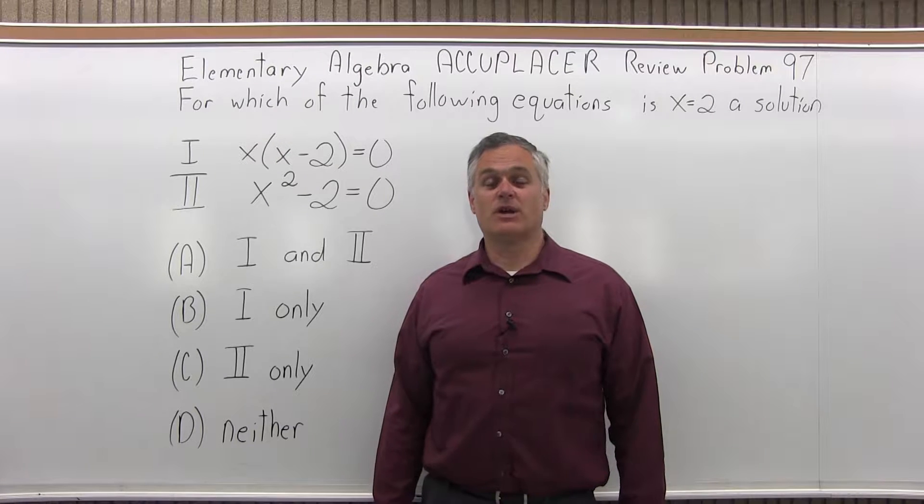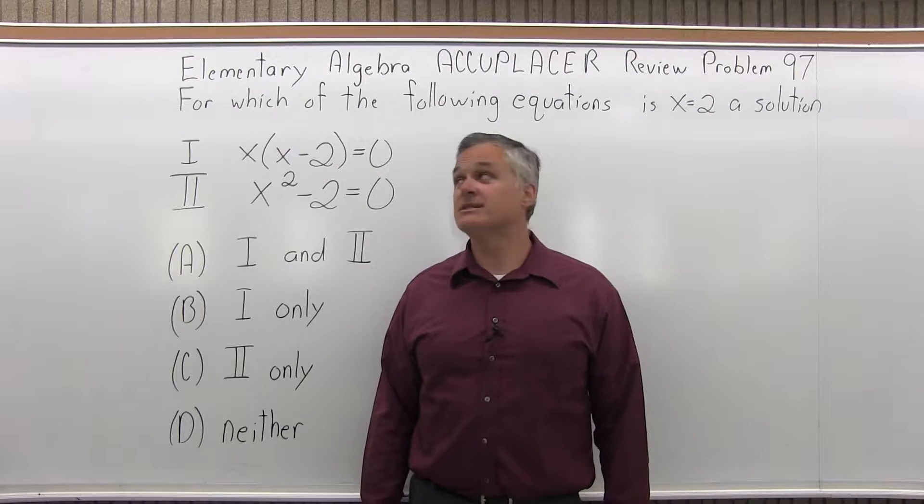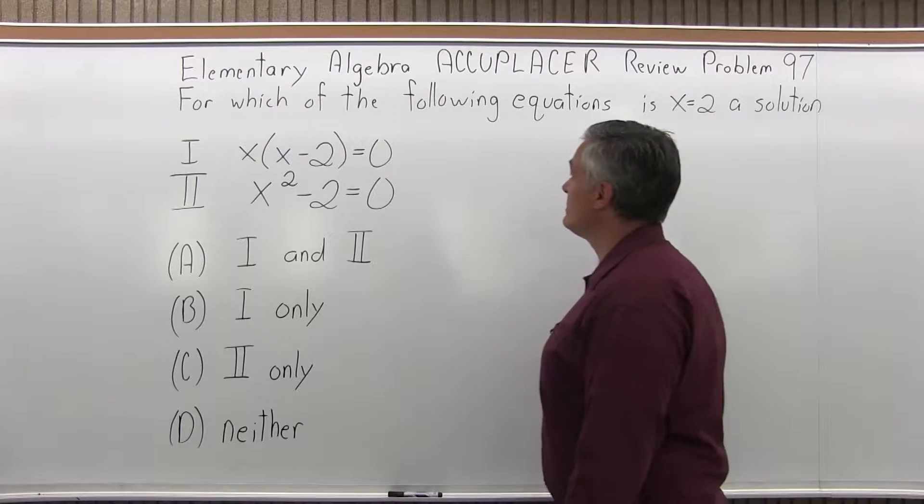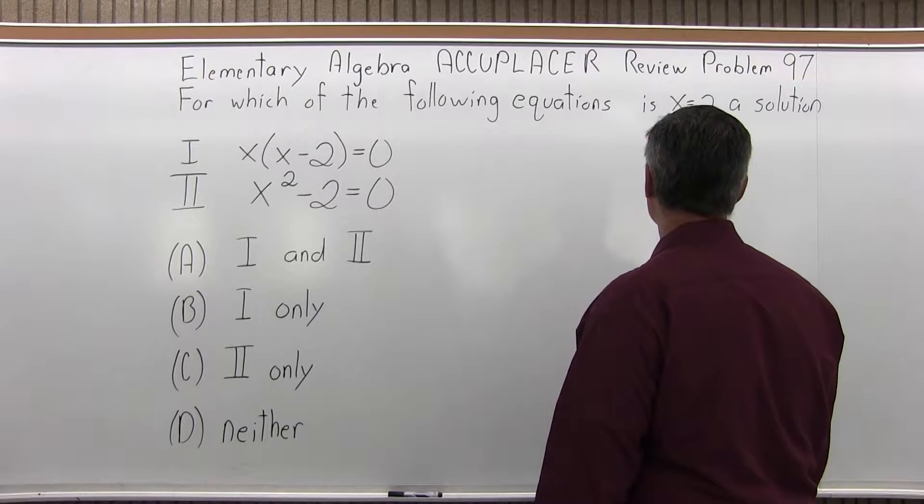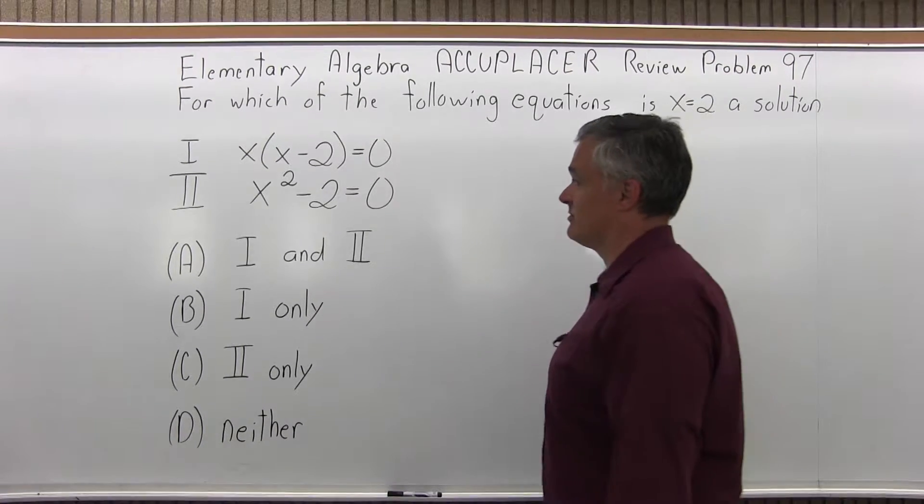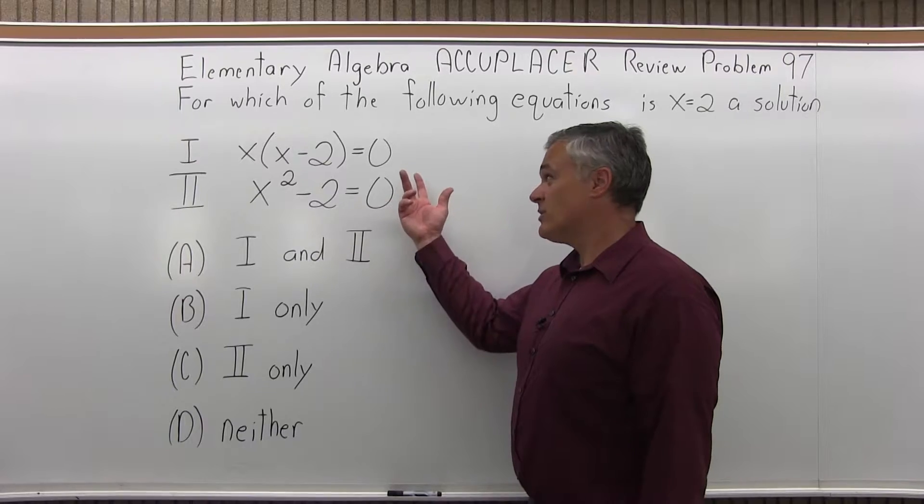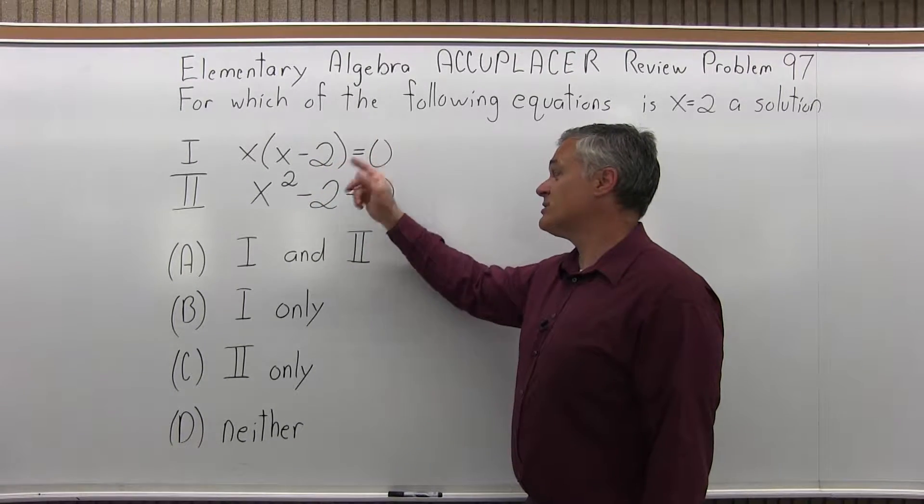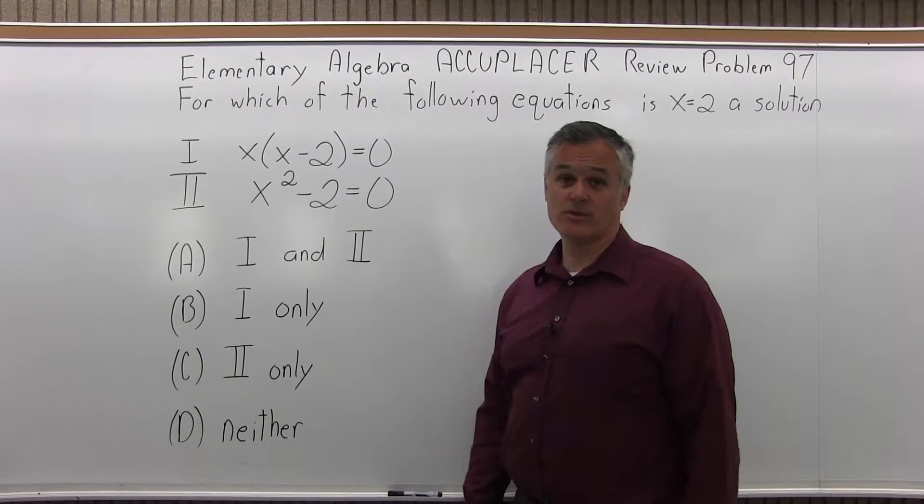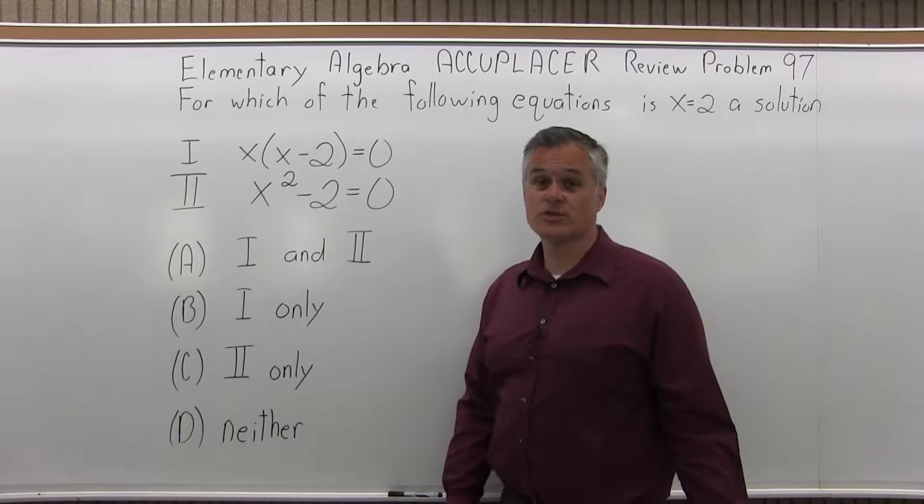This is the Elementary Algebra Accuplacer Review Problem 97. It says, for which of the following equations is x equals 2 a solution? So we have two equations: x times x minus 2 equals 0 and x squared minus 2 equals 0. Which one has x equals 2 as a solution?